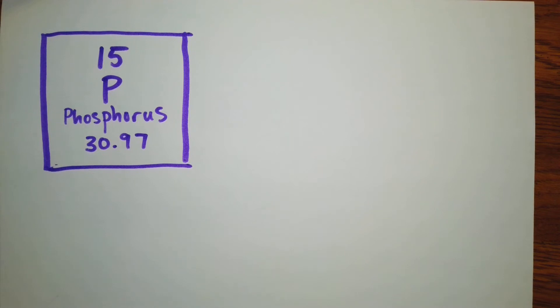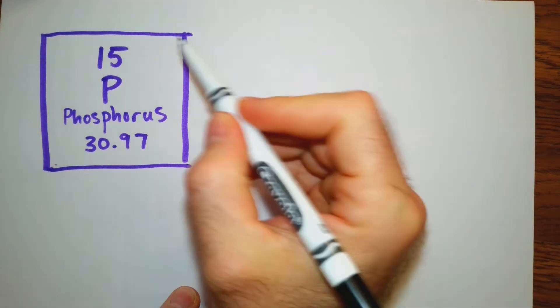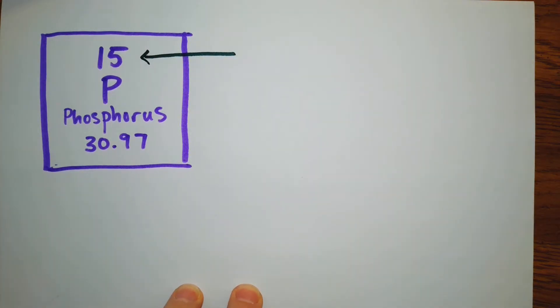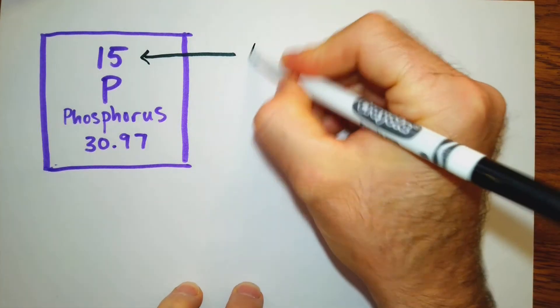So here we have the information that is contained on the periodic table for phosphorus. Let's analyze this periodic table block and determine what it means. This number right here will always be a whole number, will always be the smaller number. This is the atomic number.